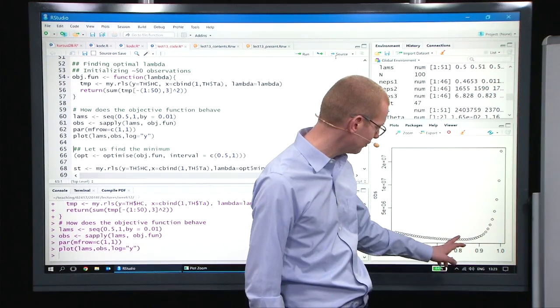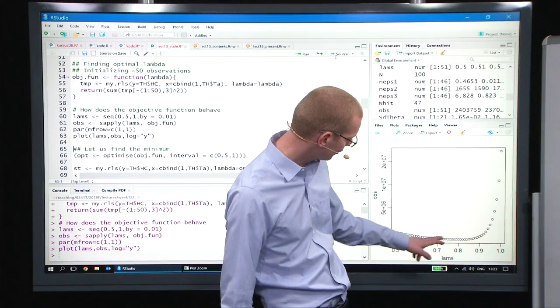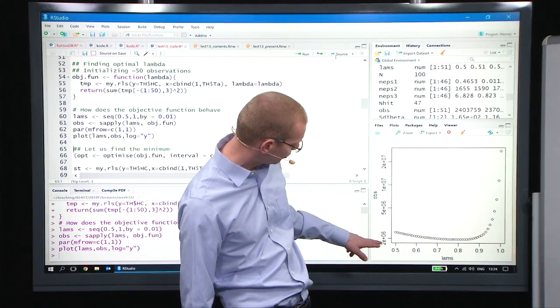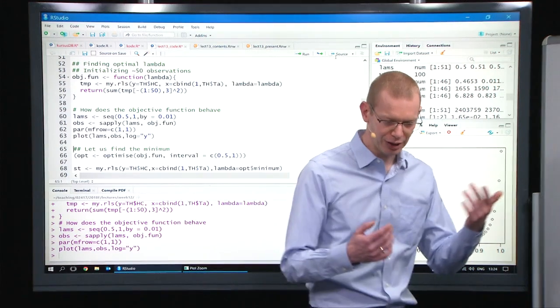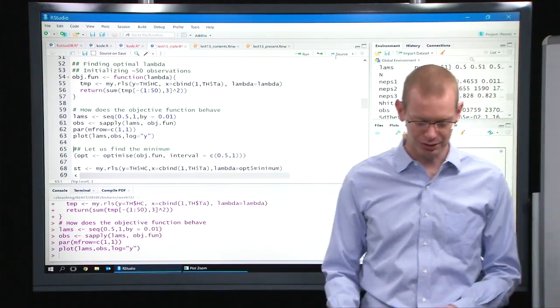We see that around 0.8, that's the optimal value. Two million is the value of the objective function that we aim at here.